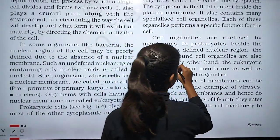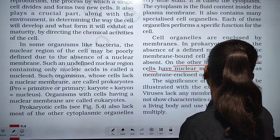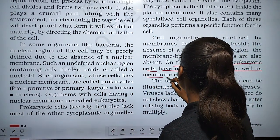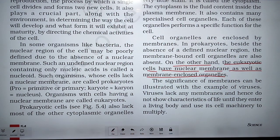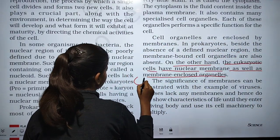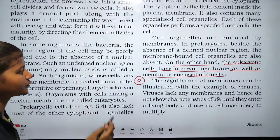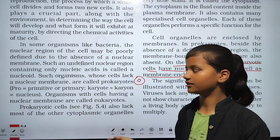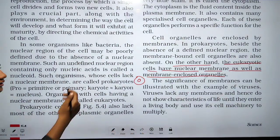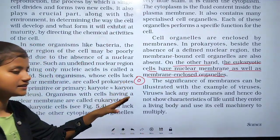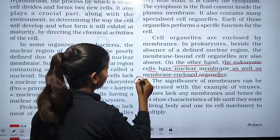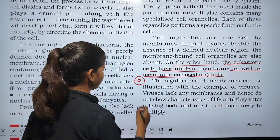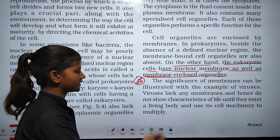On the other hand, eukaryotic cells have a nuclear membrane as well as membrane-enclosed organelles. In a eukaryotic cell, nuclear membrane is present, but in a prokaryotic cell, nuclear membrane is absent. In prokaryotes, a nucleoid is present which acts similarly to a nucleus, but in eukaryotic cells, membrane-enclosed organelles are also present.